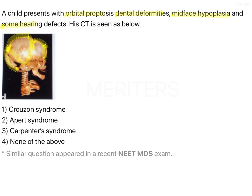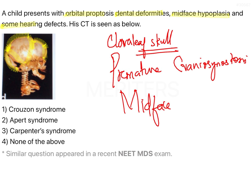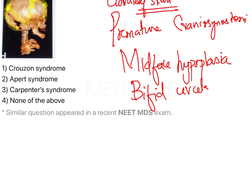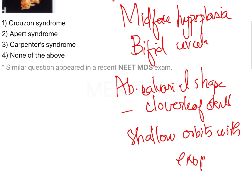So coming to the diagnosis, this syndrome is Crouzon syndrome. It is characterized by a cloverleaf skull. It is a very rare disorder characterized by premature craniosynostosis. The clinical spectrum is mainly characterized by mid-face hypoplasia, abnormal calvarial shape — which is called cloverleaf skull — and shallow orbits with exophthalmos.